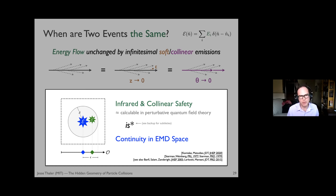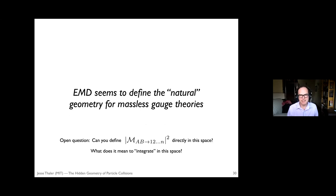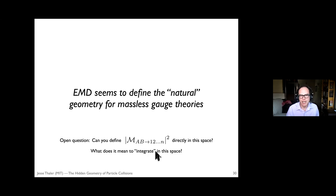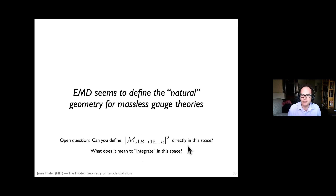The punchline is that the Energy Mover's Distance seems to define the natural geometry for massless gauge theories. Soft and collinear singularities are a ubiquitous feature of massless gauge theories, and the EMD unifies them geometrically. What I don't know how to do is define amplitudes in this space — amplitudes have a fixed particle number relative to a Fock space, whereas this EMD has a more flexible notion of multiplicity connected by soft and collinear limits. I also don't know what it means to integrate in this space. But there seems to be a hint this is the right language for massless gauge theories, and it would be interesting to see whether calculations might be easier here than in the traditional Feynman diagrammatic approach.